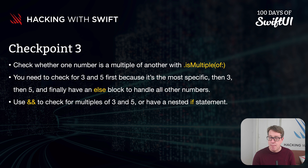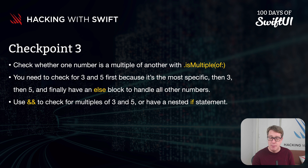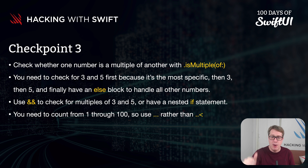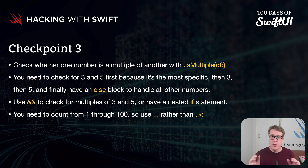You can use && (ampersand ampersand) to check multiples of 3 and 5, or use a nested if statement, depending on which one you prefer. And remember, you've got to count from 1 through 100, including both those values. So use ... (dot dot dot) rather than ..< (dot dot less than). Those are all the hints. Have fun.